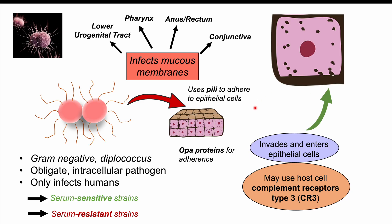Once inside an epithelial cell, the bacteria can start multiplying. The host immune system will then bring immune cells into that area, and eventually there can be purulence — pus — and sloughing off of these cells, resulting in discharge.